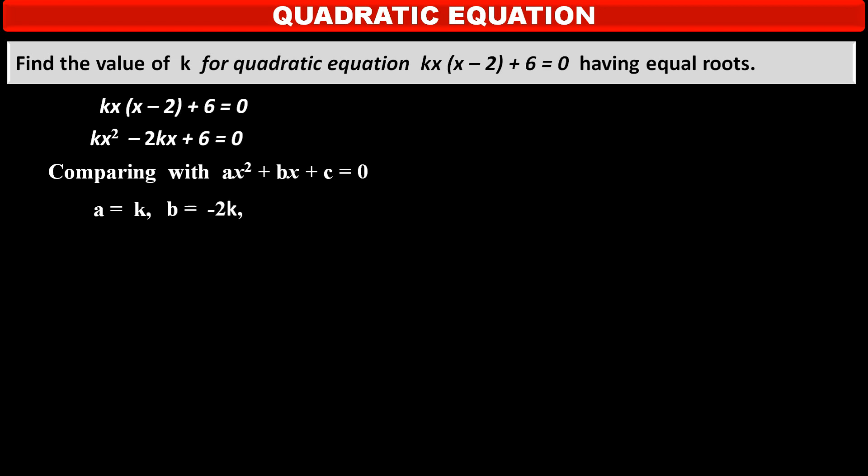b is equal to coefficient of x, that is, -2k. And c is equal to constant term 6. We know the formula of discriminant, denoted by symbol delta, is equal to b² - 4ac.